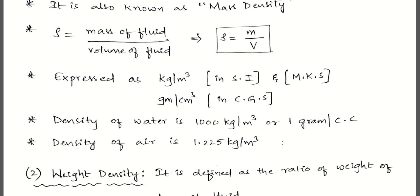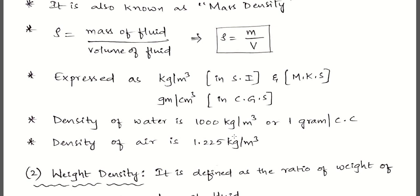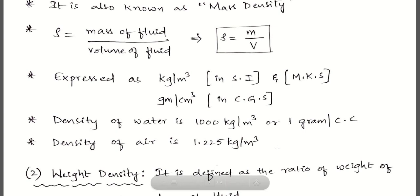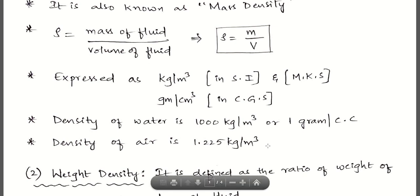In fluid mechanics, fluids include liquids as well as gases. Water is taken as the standard liquid and air is taken as the standard gas. The density of water is 1000 kg/m³ (or 1 g/cc in CGS), and the density of air is 1.225 kg/m³. Remember these values — you'll need them in competitive exams, MCQs, and laboratory experiments.